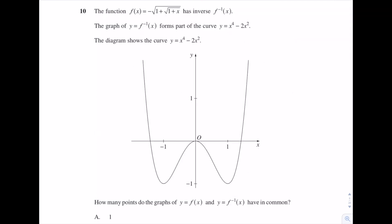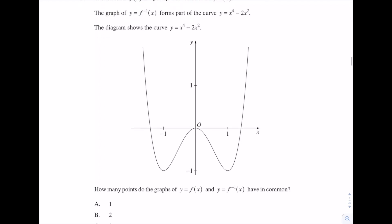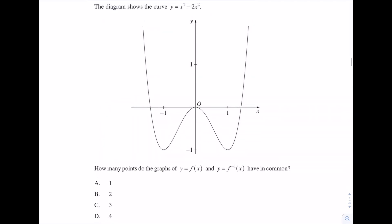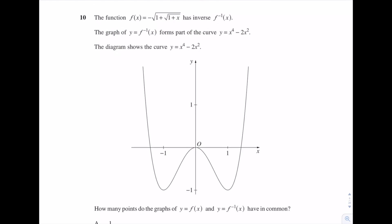Question 10. The function f(x) = -√(1 + x) has inverse function f⁻¹(x). The graph of y = f⁻¹(x) forms part of the curve y = x⁴ - 2x². The diagram shows the curve y = x⁴ - 2x². How many points do the graphs of y = f(x) and y = f⁻¹(x) have in common? And the options are 1, 2, 3 or 4. Now, we've already got the curve for the inverse function, although it only makes up part of this curve, but we've got that curve. Let's start looking at f(x) and let's investigate how it's going to look.